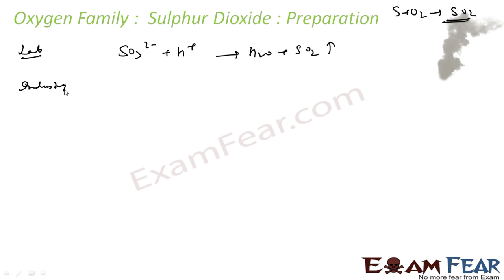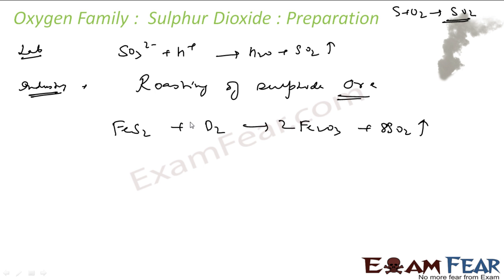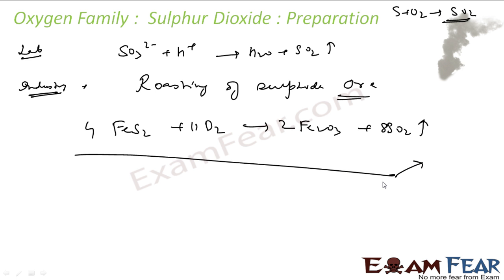In industry, we use a better way — Roasting of Sulphide Ores, which we saw in the last chapter. Roasting of Sulphide Ores produces SO2 as a by-product. For example, FeS2 is roasted to make the oxide, and Sulphur Dioxide is obtained as a by-product.